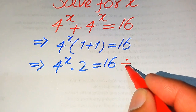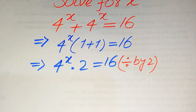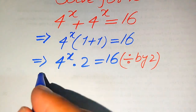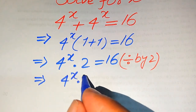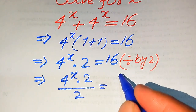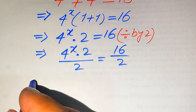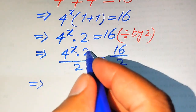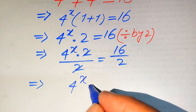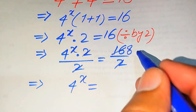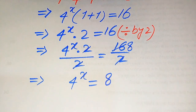Both sides are divisible by 2, so we divide both sides by 2. We have 4 to the power of x times 2 divided by 2 equals 16 divided by 2. The 2s cancel out and we get 4 to the power of x equals 8.